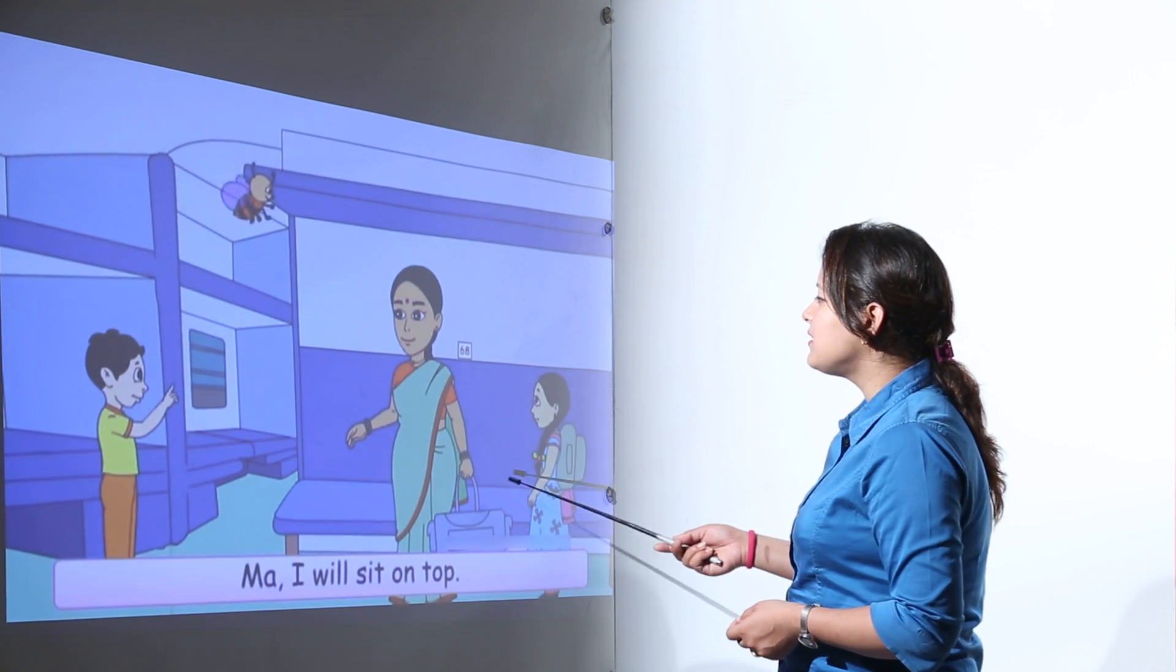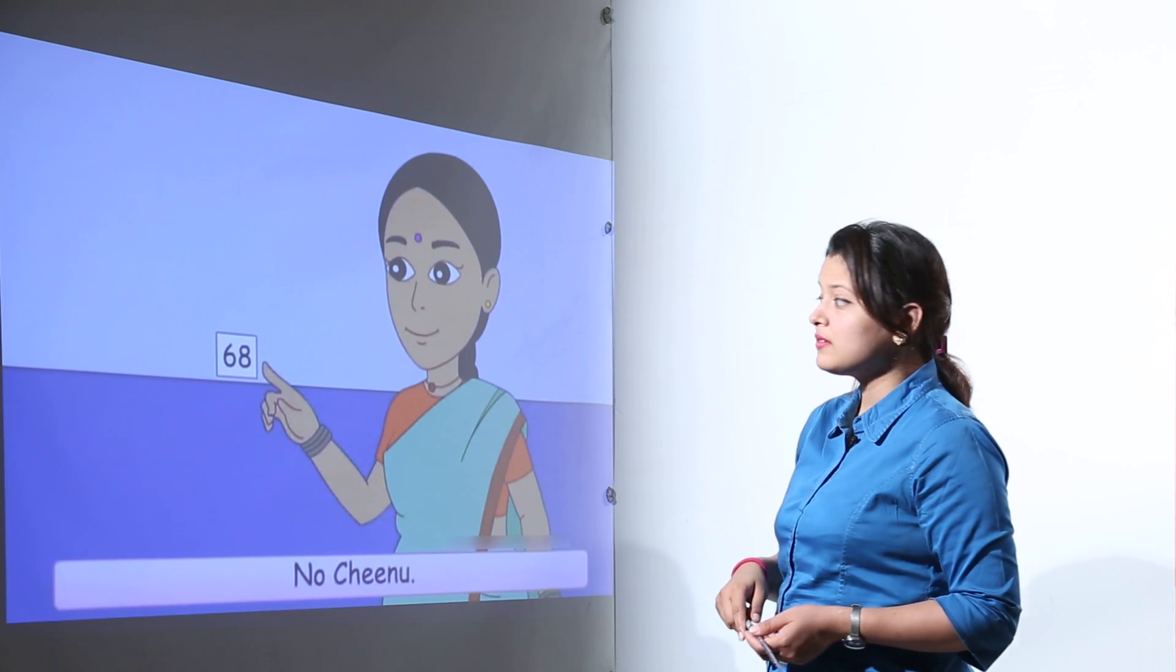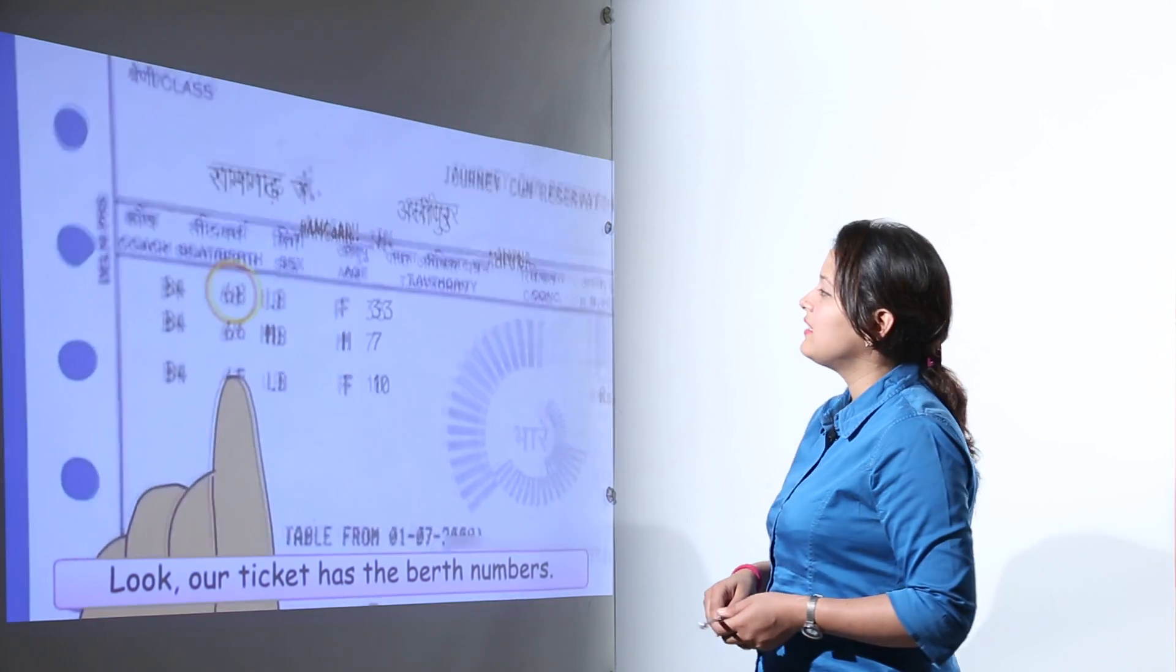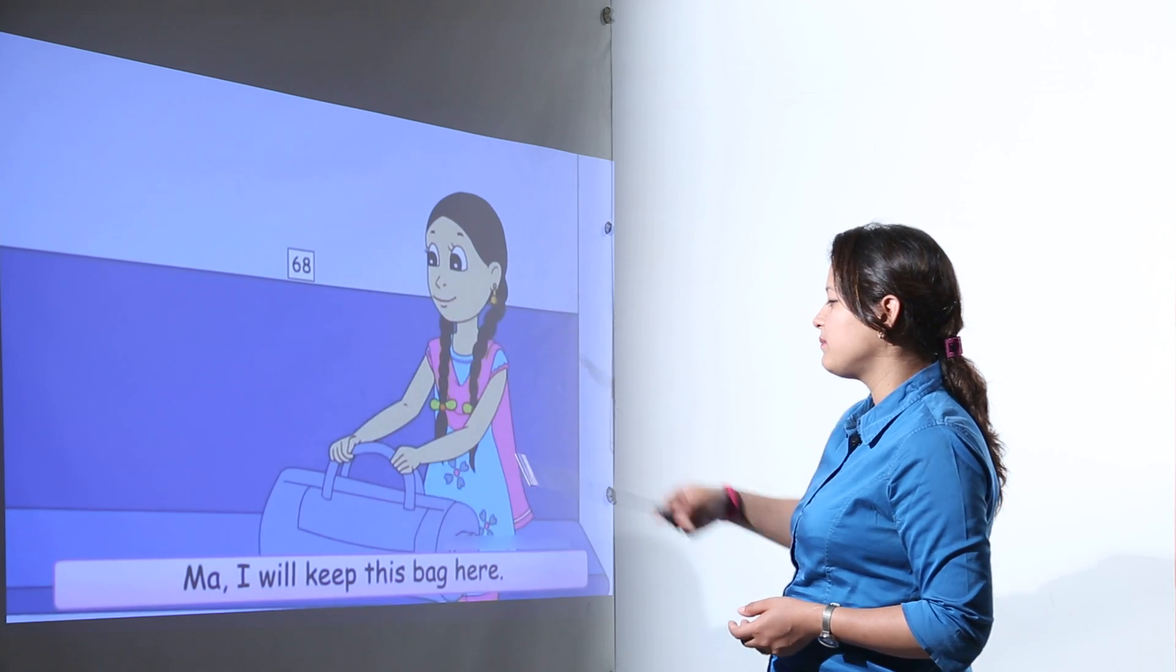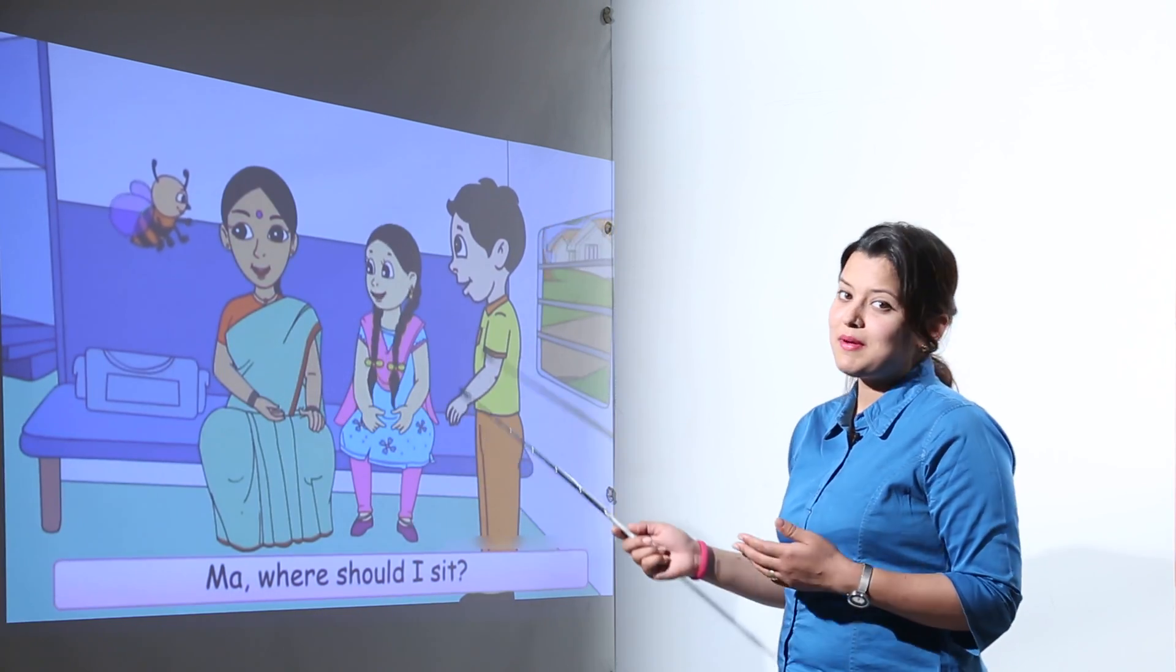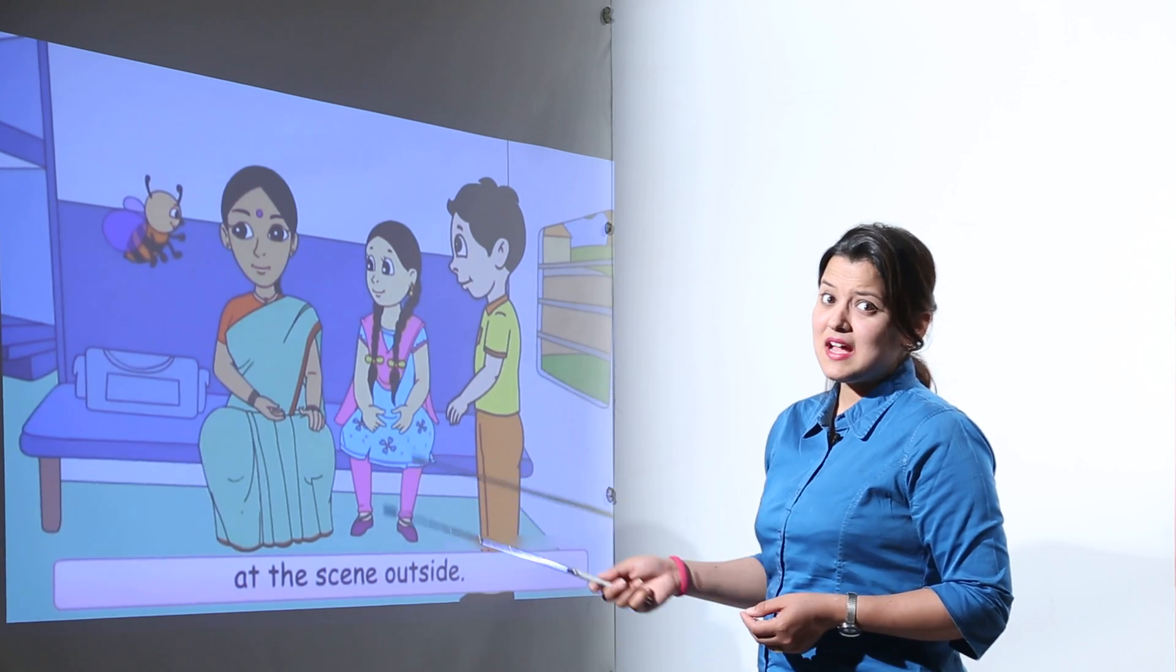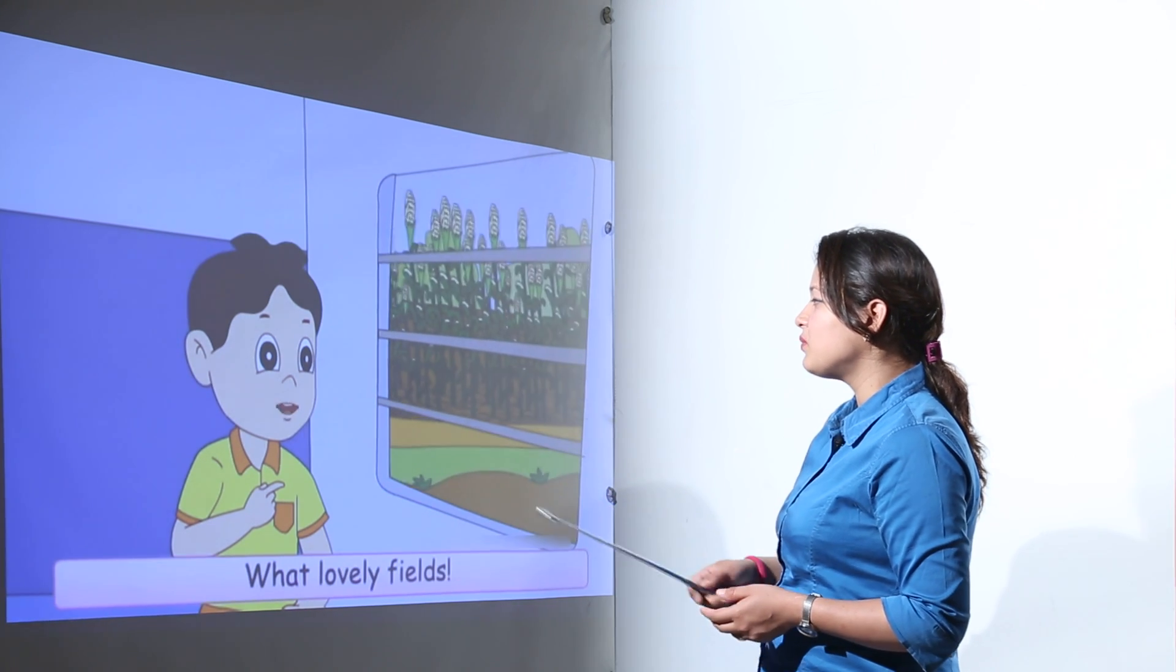They boarded their train and Tinu was deciding to go and sit on the top berth. But the mother explained that top berths are not reserved for us. We have the 68 number berth, that will be this one. Minu asks where is she going to keep the bag, so they have kept the bag to the other side. Buzz asks where does he sit, so he can sit anywhere, even on the window.